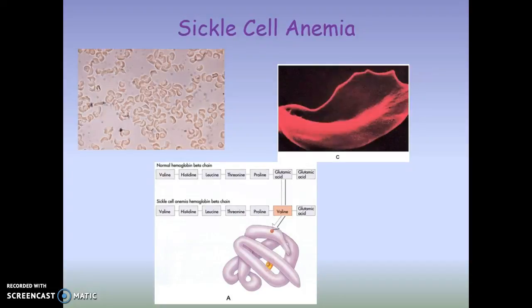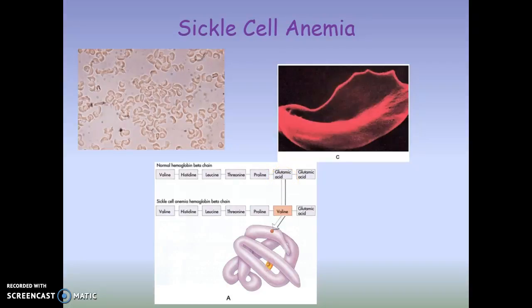With sickle cell anemia, there is a single amino acid change, as shown in the figure. The hemoglobin molecule is made of beta and alpha chains. In normal hemoglobin, the beta chain contains glutamic acid, but because of a point mutation in the DNA code, glutamic acid is converted into valine. This is critical for proper folding of hemoglobin, so the red blood cell does not maintain its proper shape.